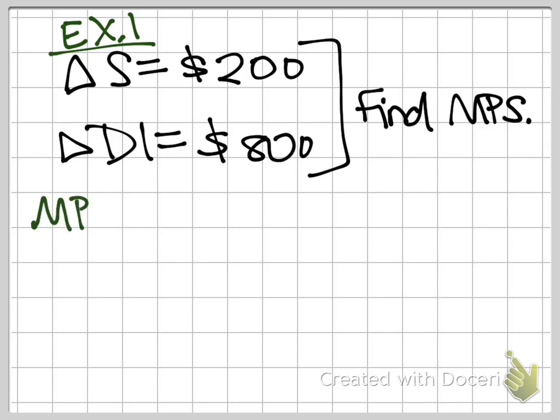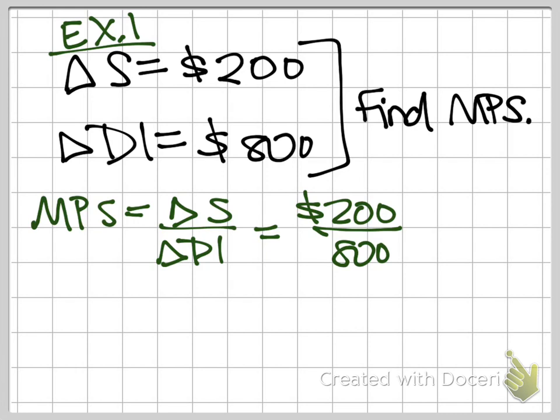Remember our equation for MPS is simply the change in savings over the change in disposable income. So we just plug in our numbers here: $200 divided by $800. Those zeros would cancel each other out. Two goes into itself one time, two goes into eight four times. And so our MPS is 1 over 4 or 1 fourth.